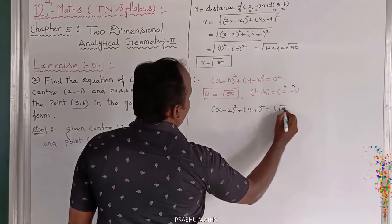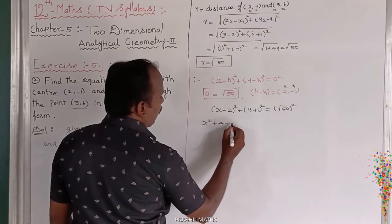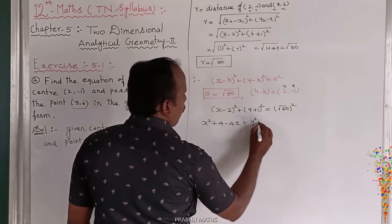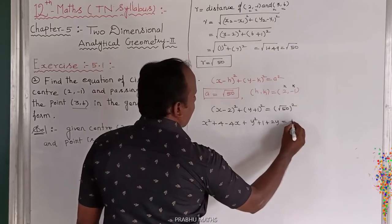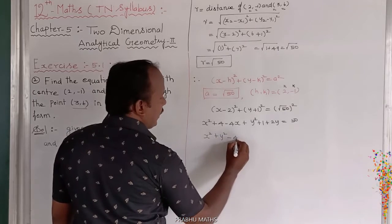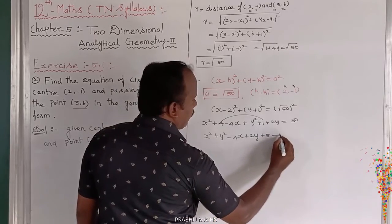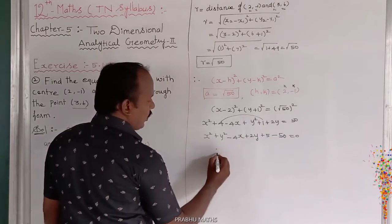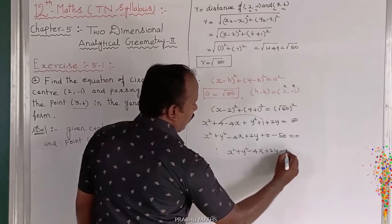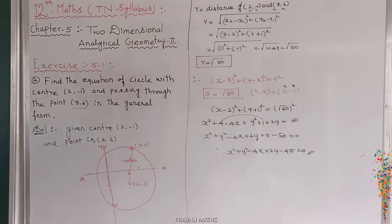Expanding using (a - b)² and (a + b)² formulas: x² - 4x + 4 + y² + 2y + 1 = 50. Collecting all terms — x² first, then y², then x, then y, then constant — gives: x² + y² - 4x + 2y + 5 - 50 = 0. Therefore, x² + y² - 4x + 2y - 45 = 0.